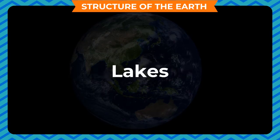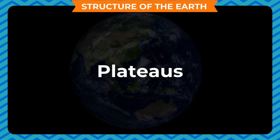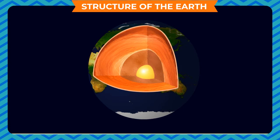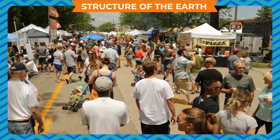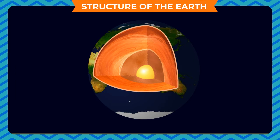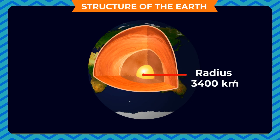Structure of the Earth: The Earth's surface has hills, mountains, lakes, rivers, seas, oceans, plains, plateaus, etc. By and large, the Earth appears to be spherical in shape. The inner structure of the Earth mainly consists of three layers: crust, mantle, and core. The crust is the outermost layer, 71% covered by water, where living beings survive. The mantle extends to a depth of about 2900 km from the base of the crust and is mainly made up of iron and magnesium, with molten matter called magma present in the inner layer. The core is the innermost region of the Earth, with a radius of about 3400 km.